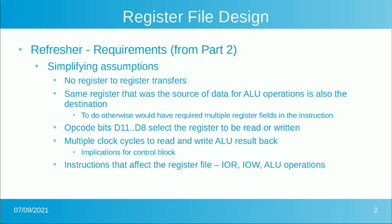The opcode bits from the ROM, bits 11 down to 8, will select the register to be read or written — a pretty simple choice. It will take multiple clocks to read data and write the ALU result back, handled by a 2-bit gray code state machine we'll implement later. That will provide enough time for the data to come out of the register file, go through the ALU, and be written back on another clock. The three instructions that affect the register file are IO read, IO write, and ALU operations.